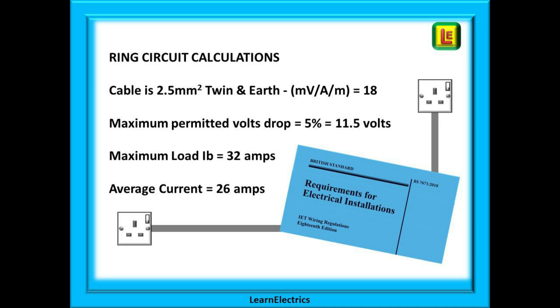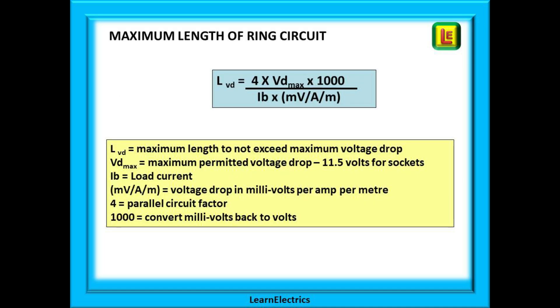We said that we would calculate maximum lengths first. This is the standard formula for calculating the maximum length of a cable that will not take us over the maximum volts drop limit. In the box below we've shown what each symbol means. LVD will be our answer, the maximum length to not exceed the maximum voltage drop. VD max is the maximum permitted voltage drop, 11.5 volts for sockets. IB is the load current. MVAM, as we said earlier, is the voltage drop in millivolts per amp per meter. 4 is the parallel circuit factor we calculated earlier, and 1000 is used to convert millivolts back to volts.